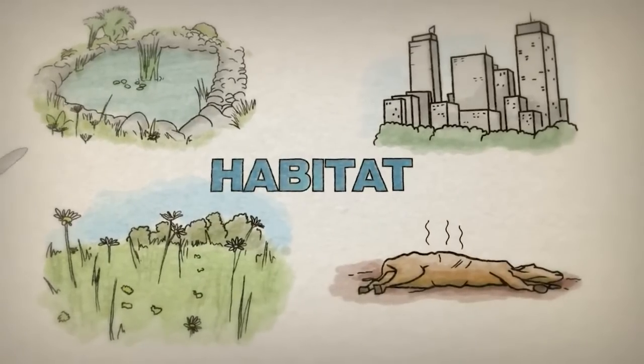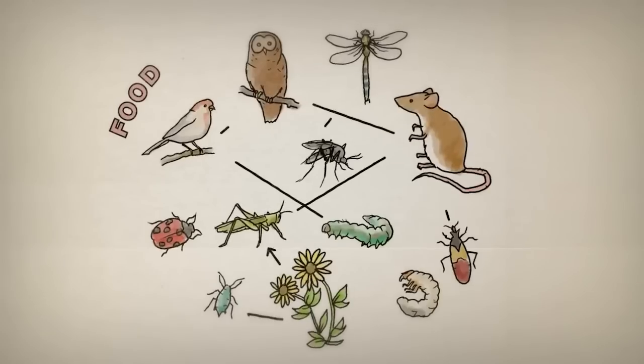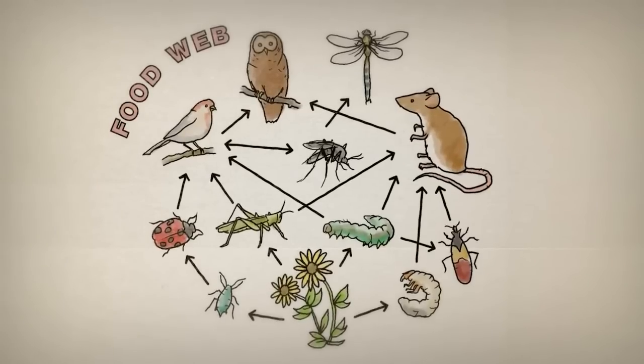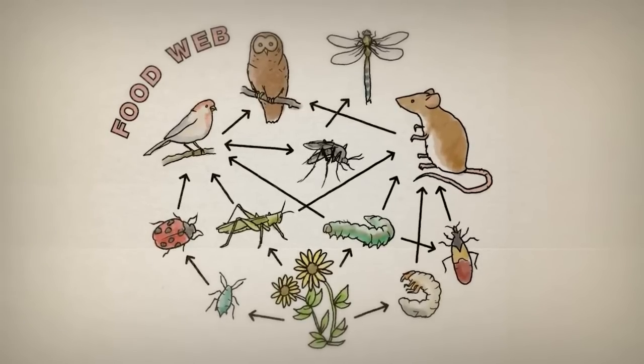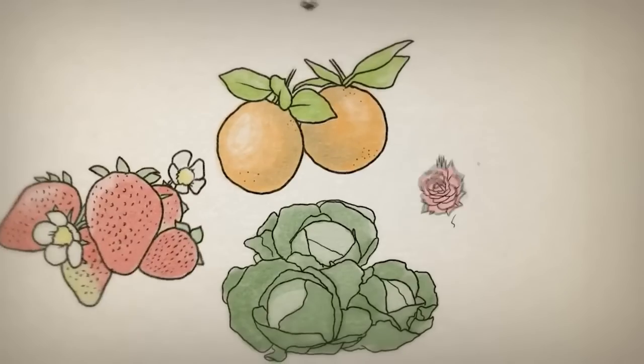Insects have an important role in the food web. Without insects, our lives will be very different. They pollinate many of our fruits, flowers and vegetables.